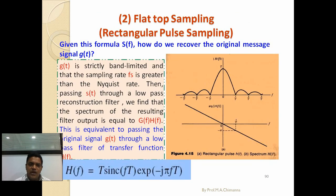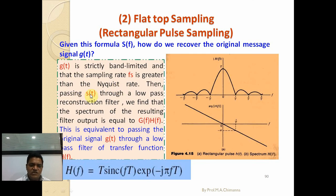Rectangular pulse sampling gives the formula for S(f). To recover the original message signal using flat top sampling, the frequency spectrum of g(t) is strictly band-limited and the sampling rate f_s is greater than the Nyquist rate (f_s = 2·f_m). Passing s(t) through the low-pass reconstruction filter gives a spectrum equal to G(f)·H(f), equivalent to passing g(t) through a low-pass filter of transfer function H(f) = τ·sinc(fτ)·e^(−jπfτ).